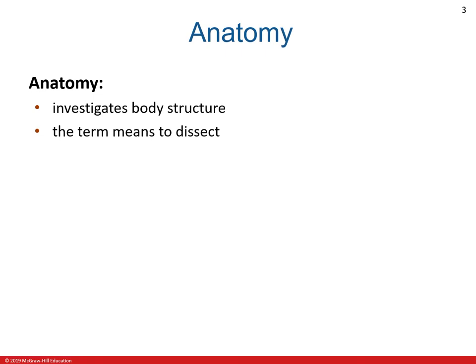Let us define the terminology anatomy. Anatomy is a scientific discipline that investigates the body's structure — for example, the shape and size of bones. Anatomy also examines the relationship between the structure of a body part and its function. The fact that bone cells are surrounded by a hard, mineralized substance enables the bones to provide strength and support. Understanding this relationship makes it easier to understand and appreciate anatomy.